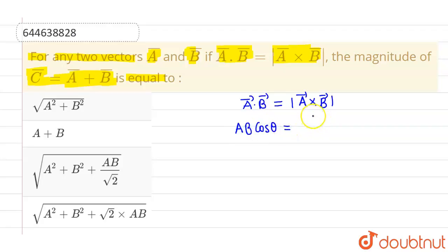And this is equals to magnitude of A cross B, which is magnitude of A, magnitude of B into sin theta. So from here I will be getting tan theta equals 1 after cancelling AB from both sides, and this implies that theta equals 45 degrees.